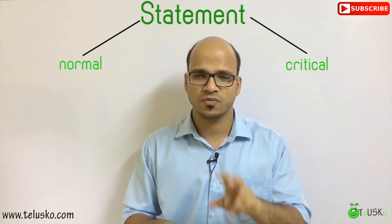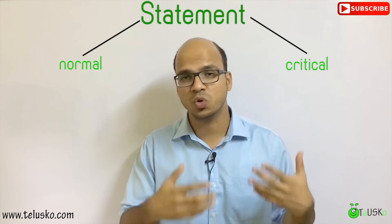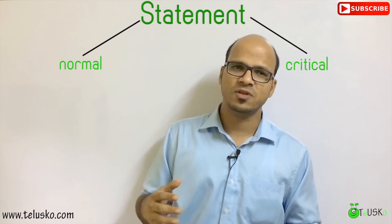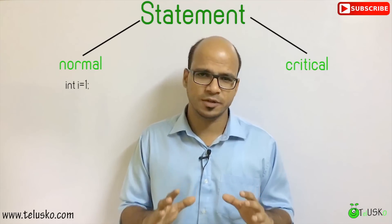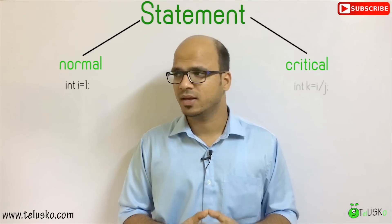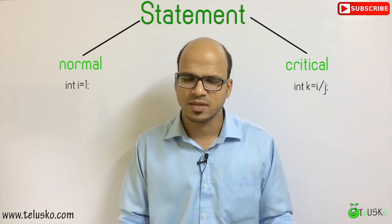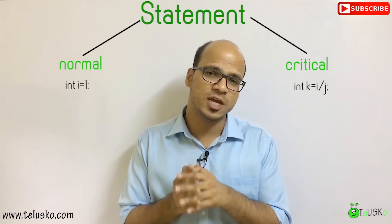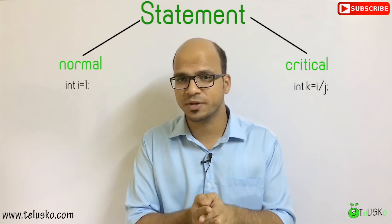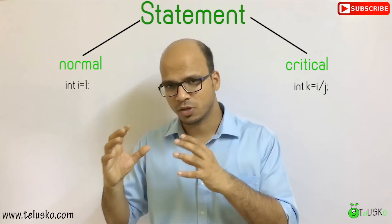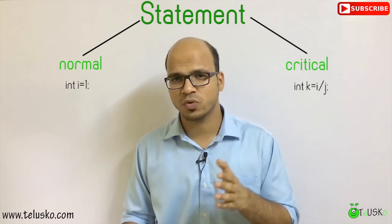In the same way, in your software when you write code, we have normal statements where you will not face any problem, and critical statements where you may face a problem. For example, if I say 'int i = 1', there is no problem — that's a normal statement. But as soon as I say 'int k = i / j', this statement becomes critical because the value of j might be 0, and any number divided by 0 will throw an exception. So that's a critical statement.